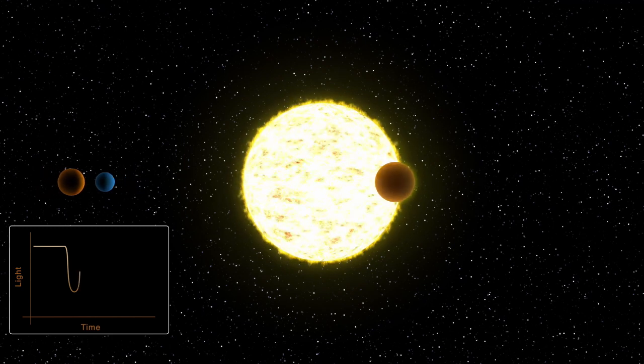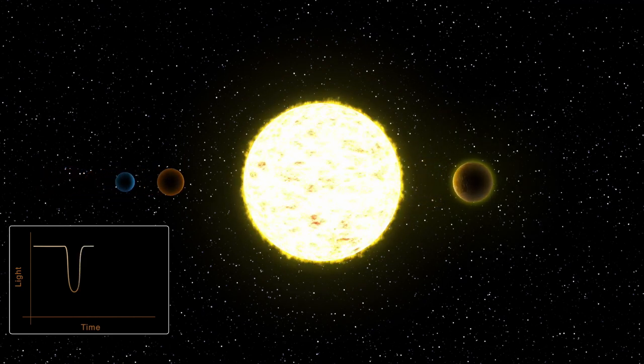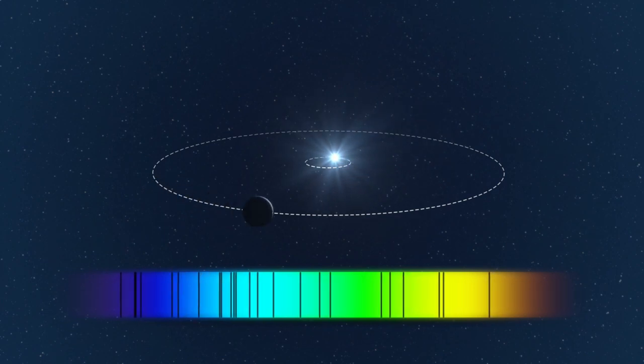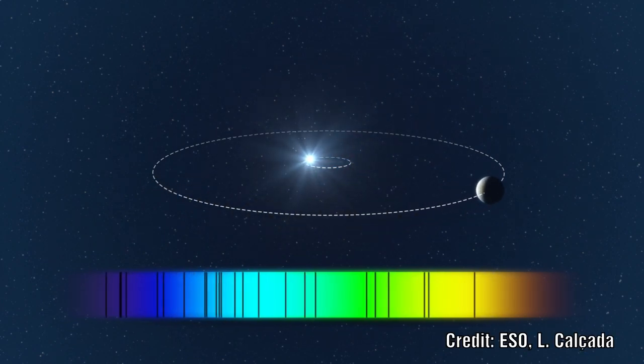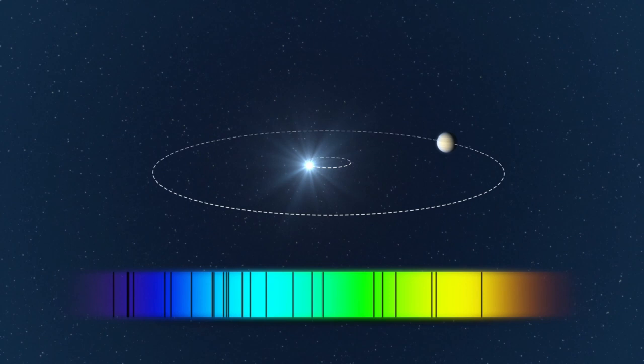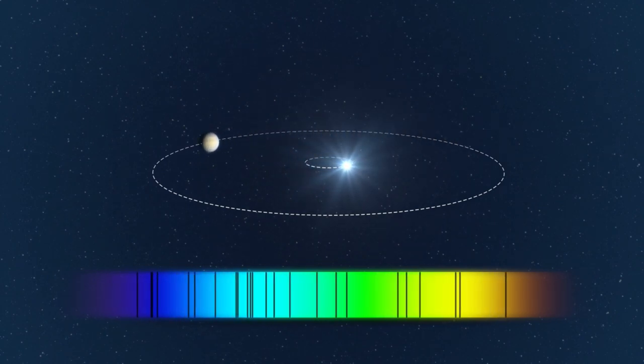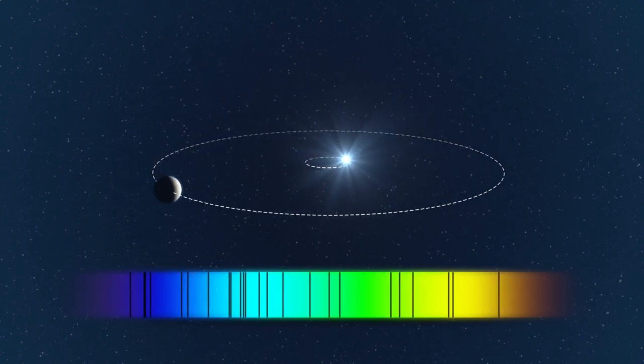This tells them the size, and the time period tells them the approximate radius from the star. The redshift then tells them how much wobble this causes on the star. More massive planets will cause a greater wobble on the star. They are not directly observing the planets themselves.